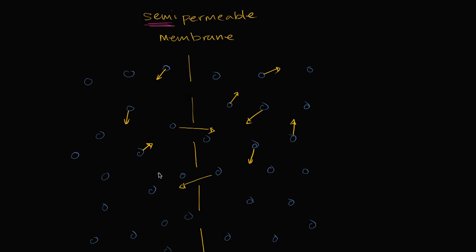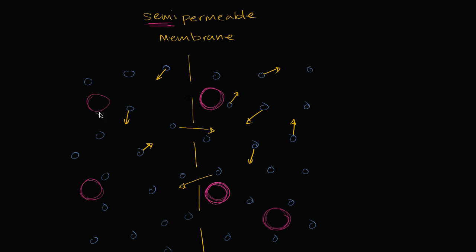Now let's make this interesting. Let's treat our water as a solvent and put some solute in it — let's dissolve some solute. I'm going to make the solute particles bigger so you can see they would physically have trouble passing through these gaps. There are other ways a semi-permeable membrane can use charge to allow certain things through and not others, but size is easier to visualize. I'll put a little bit of solute on the left, but many more on the right hand side, so we have a higher concentration of solute on the right.